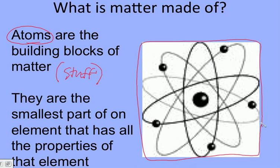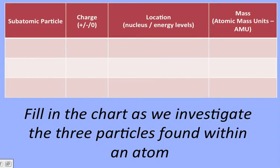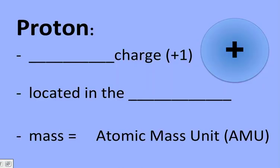In this model of the atom, there's a specific location for each of the atomic particles we're going to talk about today. As we discuss these three atomic particles, we're going to fill this chart in together — getting a name, the charge, the location, and the mass for each atomic particle.